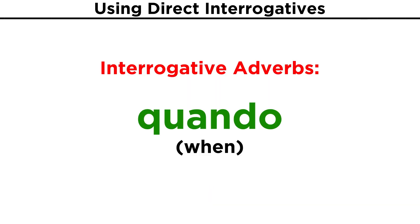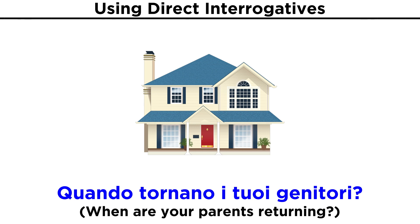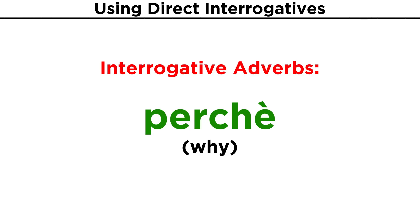Now let's learn how to ask when. This will require the word quando. Another word we need to know is why. This will be perché, and it will be used any time you want a reason for something.